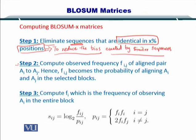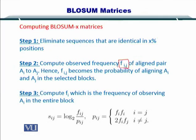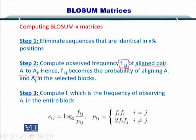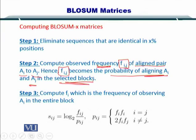In the second step, you compute the observed frequency of substitution between amino acid i and amino acid j, noted in the aligned pair Ai and Aj only. So if one amino acid is substituted by another, you compute the frequency. Fij becomes the probability of aligning Ai and Aj in the selected blocks.